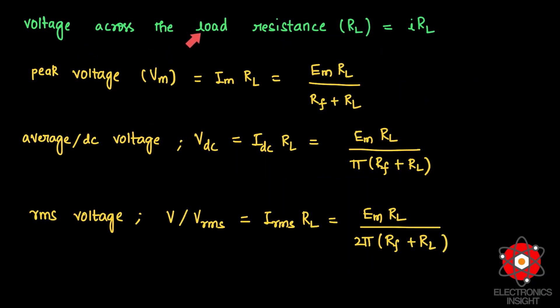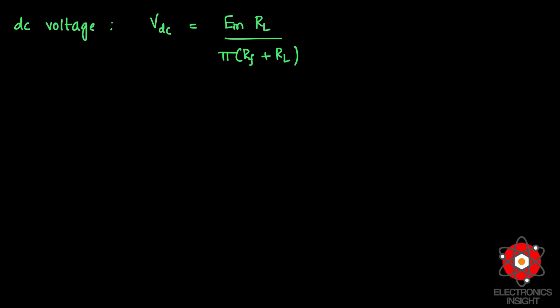Since the voltage across load resistance RL is V = I·RL, we can write the peak voltage, average DC voltage, and RMS voltage. The peak voltage is Vm = Im·RL, the DC voltage is VDC = IDC·RL = Em·RL / [π·(RF + RL)], and the RMS voltage is VRMS = IRMS·RL. We can also rewrite VDC by substituting the IDC formula, confirming the same expression.